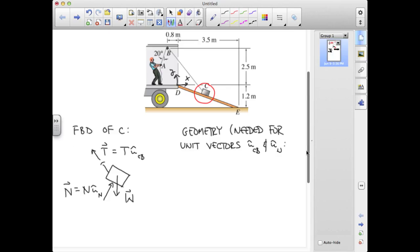I can now write position vectors of different key points on this figure that will help me in establishing these unit vectors. The position vector of E in this coordinate system will be 3.5 meters in I and minus 1.2 meters in J. The position vector of C for the specific case of problem 3.25 is 3 quarters of the way down the ramp, so that's going to be 3 quarters of the position vector to E, and that turns out to be 2.625 meters in I minus 0.9 meters in J.